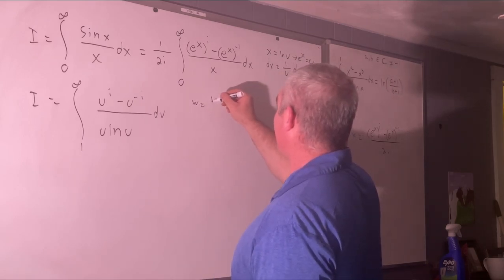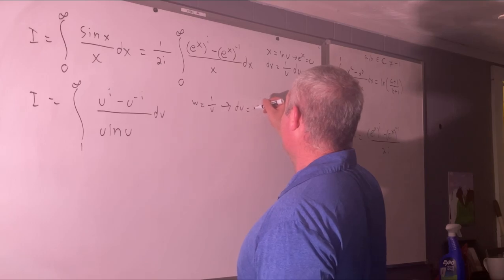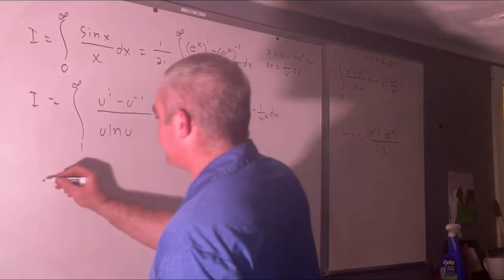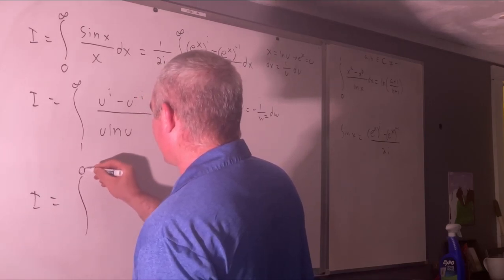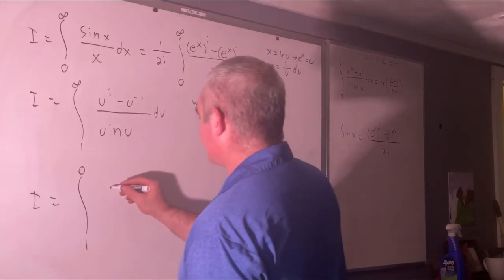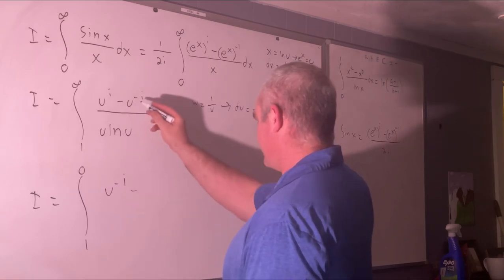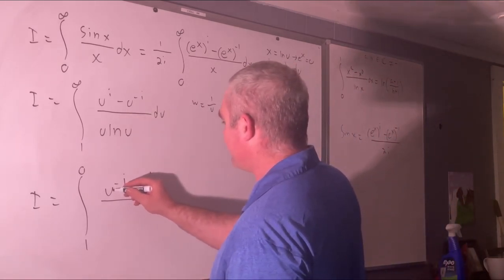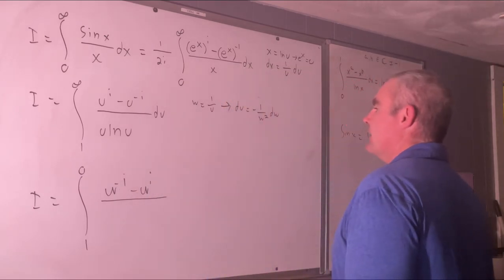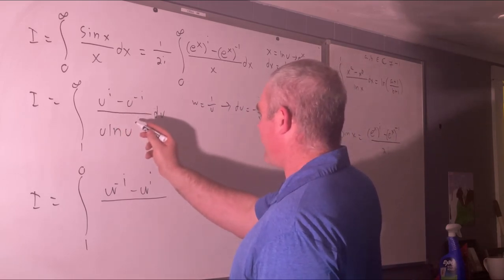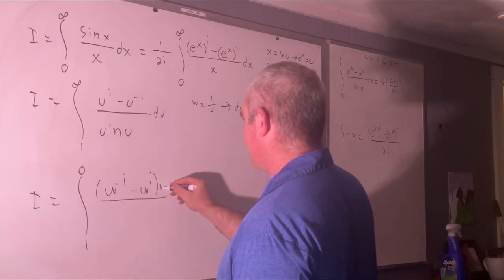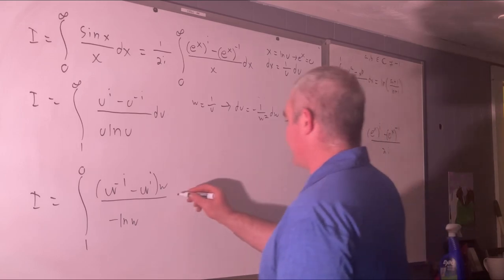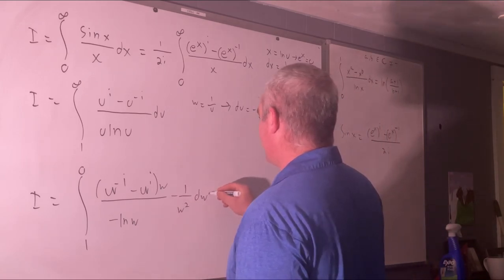And then we'll let w equal 1 over u, implying that du is equal to negative 1 over w squared dw. Okay, so this means i is now equal to, let's see, 1 over infinity is 0, 1 over 1 is 1. This u to the i will switch to w to the negative i minus w to the i over natural log w. This will be over 1 over w, or we'll just put w up here. And then natural log 1 over w is negative natural log w. And our du is negative 1 over w squared dw.